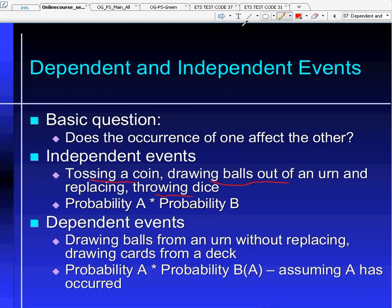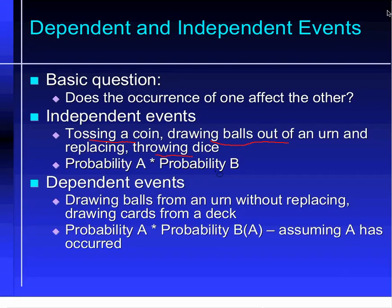Flipping a coin, drawing balls out of an urn and replacing them, throwing dice — these are independent events, and that's very simple. It's probability A times probability B. Dependent events are almost as simple.